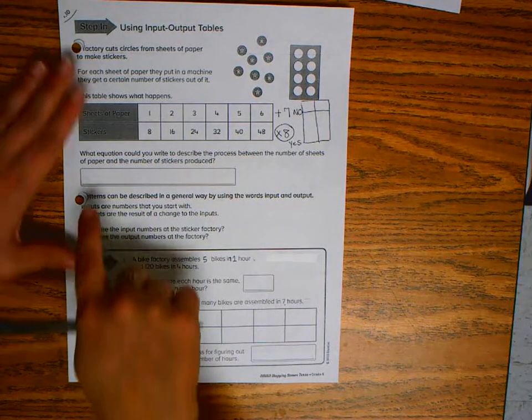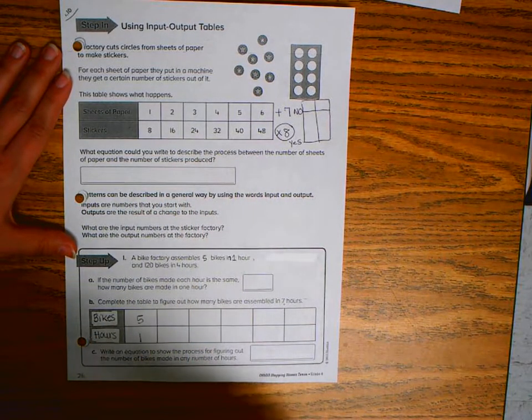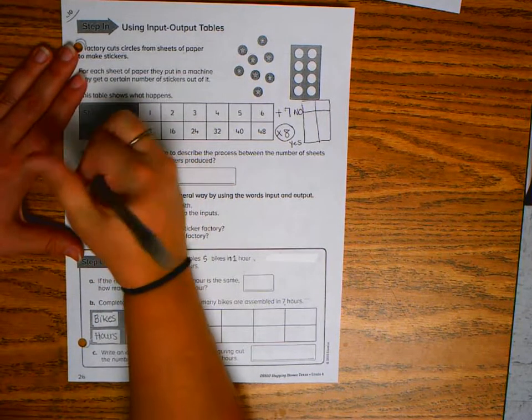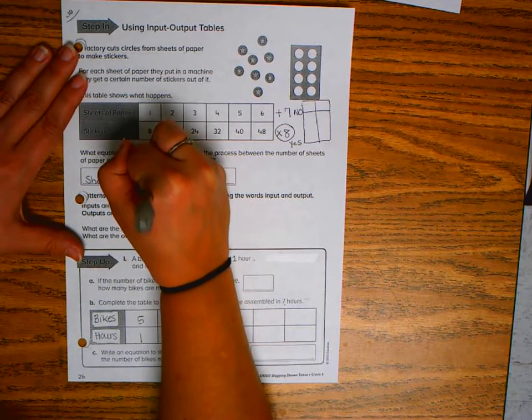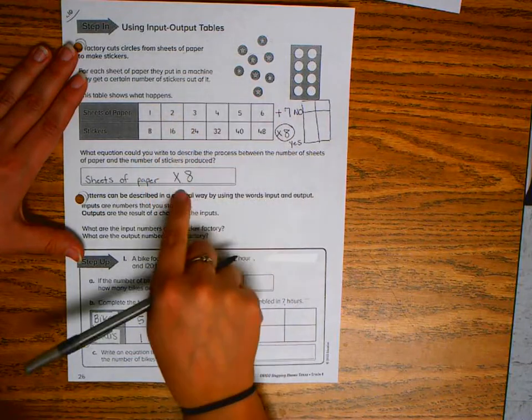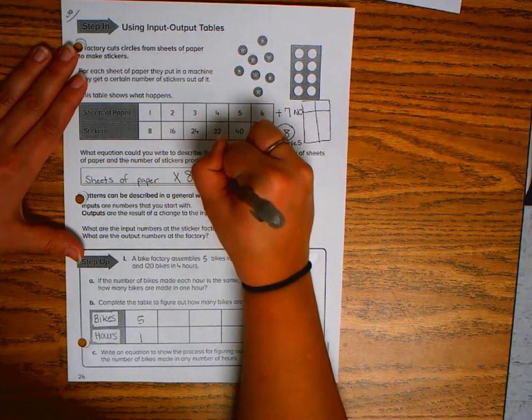So now it says what equation can you write to describe the process between the number of sheets of paper and the number of stickers produced. Our rule would be our input, which is sheets of paper, times eight equals our number of stickers.